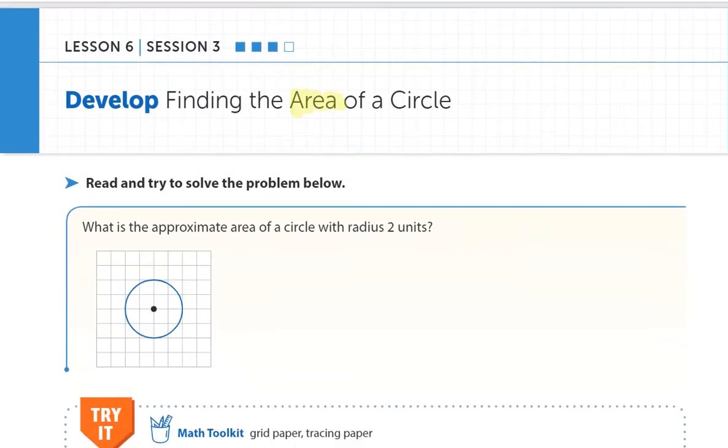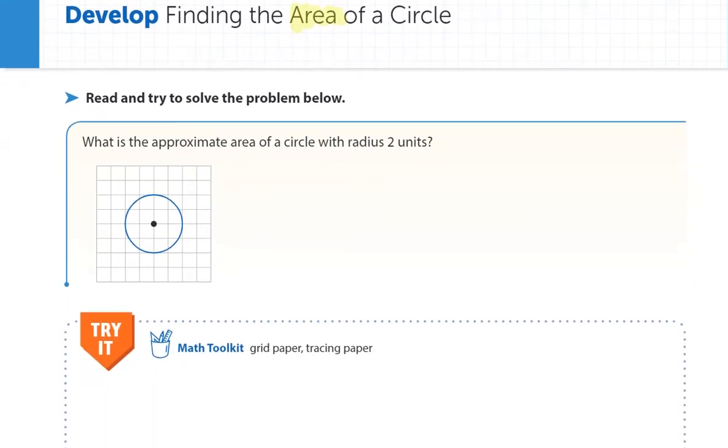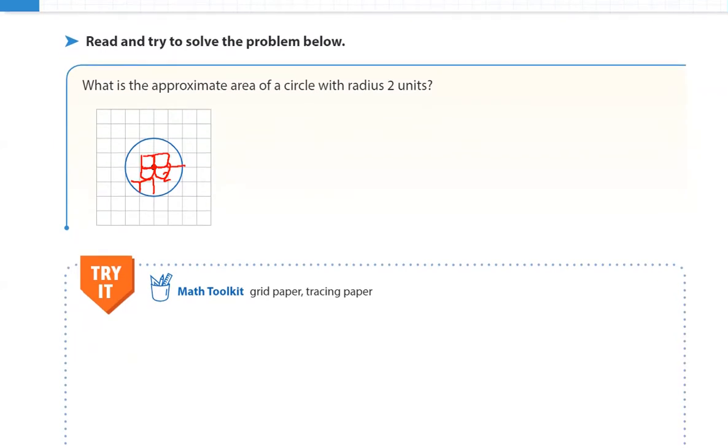So here's our try it problem. I'm gonna let you do this one on your own. This one says what is the approximate area of the circle with a radius of two units and the most help you're getting from me is that the radius is halfway across so that's two. Figure out how many squares of area this is. You figure it out. Unpause when you're done.